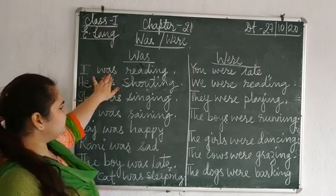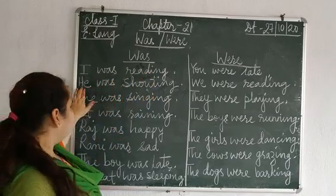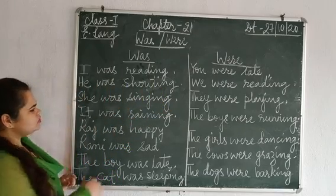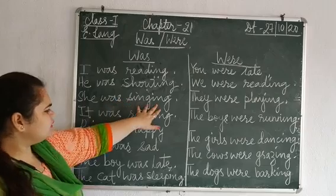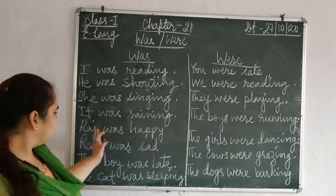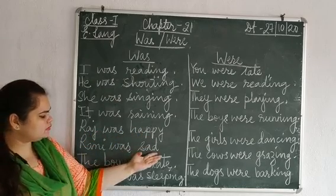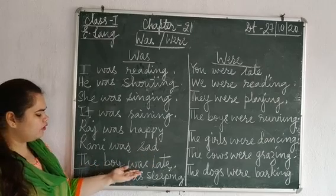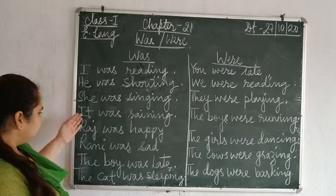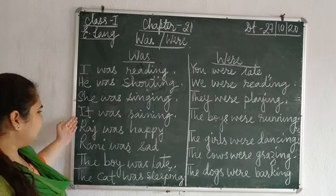I was reading. He was shouting. She was singing. It was raining. Raj was happy. Rani was sad. The boy was late. The cat was sleeping. Now here, instead of the nouns given, you can use any singular noun.